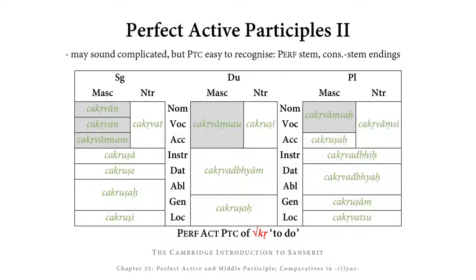Finally, in the locative plural, we have the suffix SUH. SUH begins with a voiceless consonant, so the weak suffix appears as WAT, ending in T, which is voiceless, just like the S that follows. So we have the form CHAKR WAT SUH.